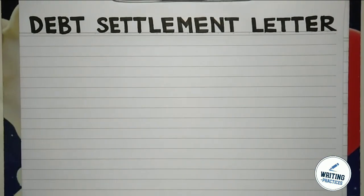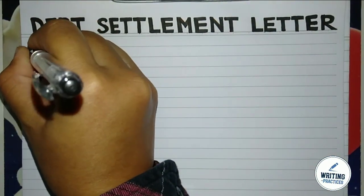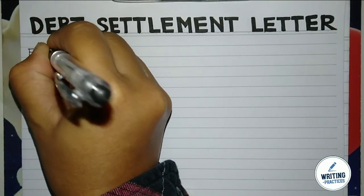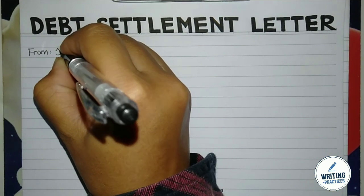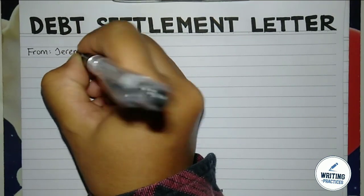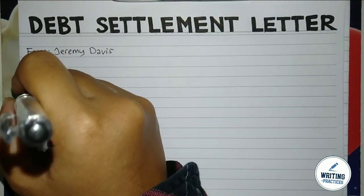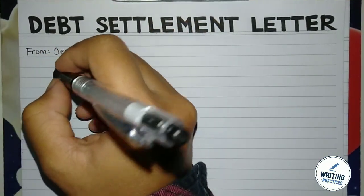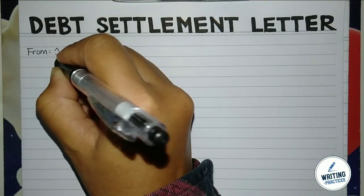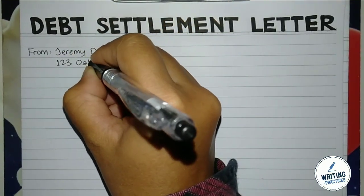Hello guys, welcome back to my channel Writing Practices. Today we are going to learn how to write a debt settlement letter. A debt settlement letter is a written communication between a debtor and a creditor, typically used when a debtor is experiencing financial hardship and unable to repay a debt in full. In this letter, the debtor proposes a settlement offer to the creditor, which usually involves paying a reduced amount to satisfy the debt.